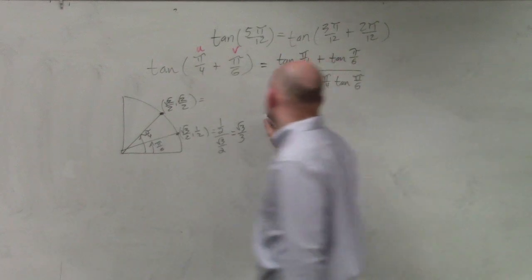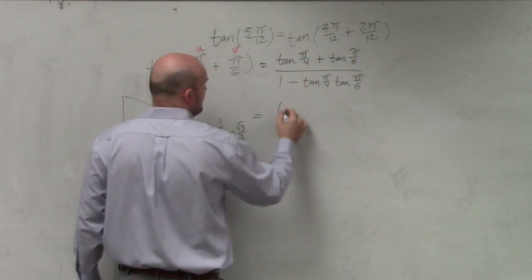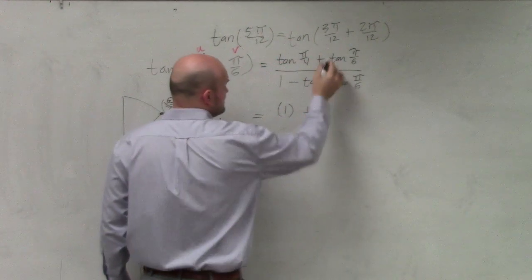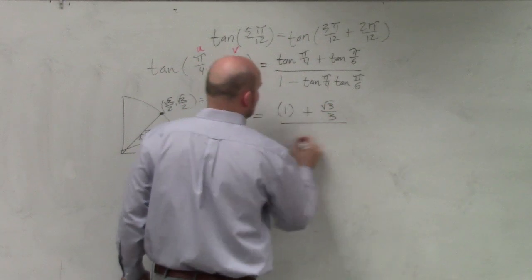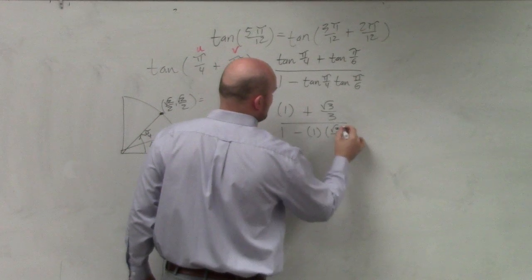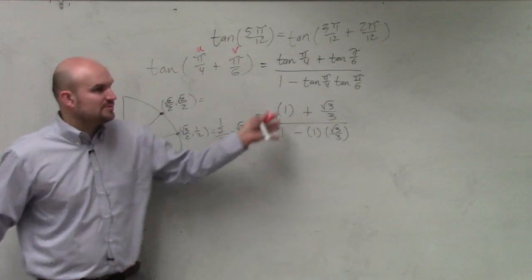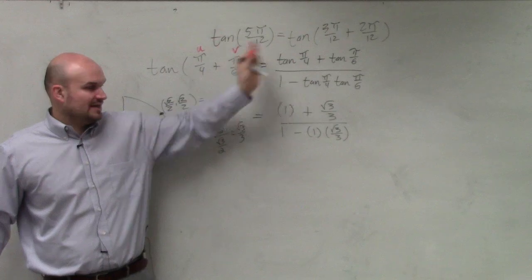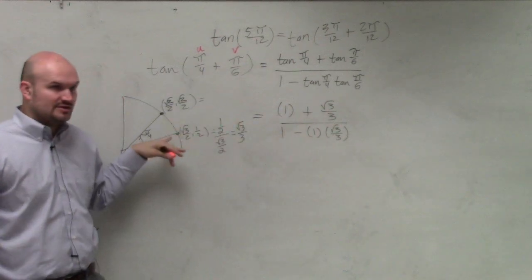So now, I'm just going to evaluate everything. So tangent of π over 4 is 1 plus tangent of the square root of 3 over 3 divided by 1 minus 1 times the square root of 3 over 3. Does everybody see how I just replaced each tangent of an angle for its value based on the unit circle?